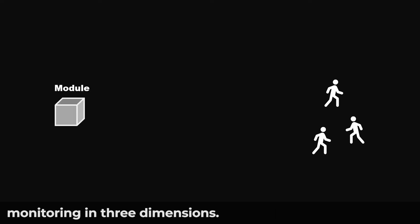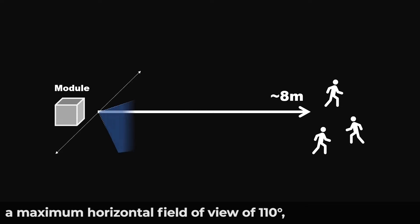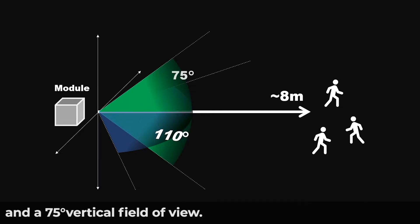The millimeter wave radar module shown here can perform monitoring in three dimensions. It has an effective monitoring distance of 8 meters, a maximum horizontal field of view of 110 degrees, and a 75-degree vertical field of view.